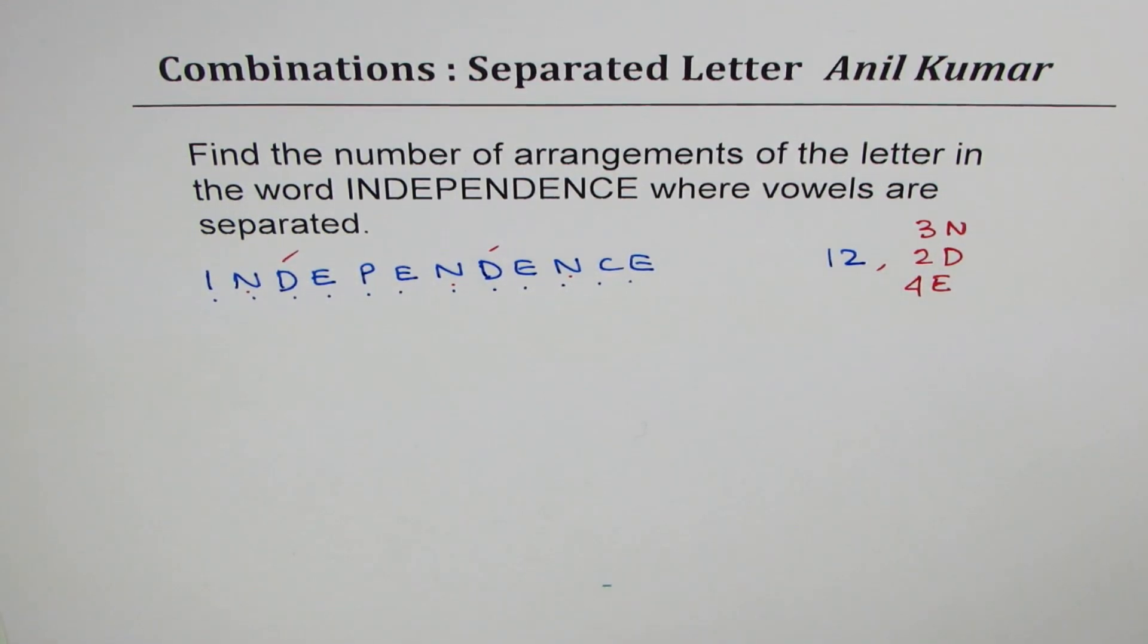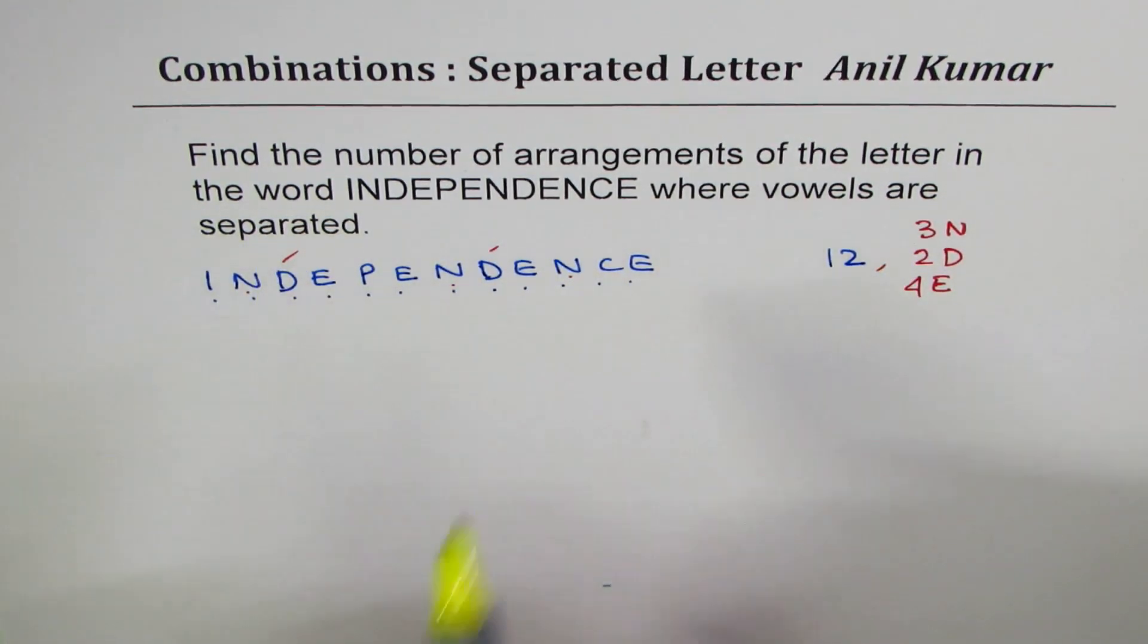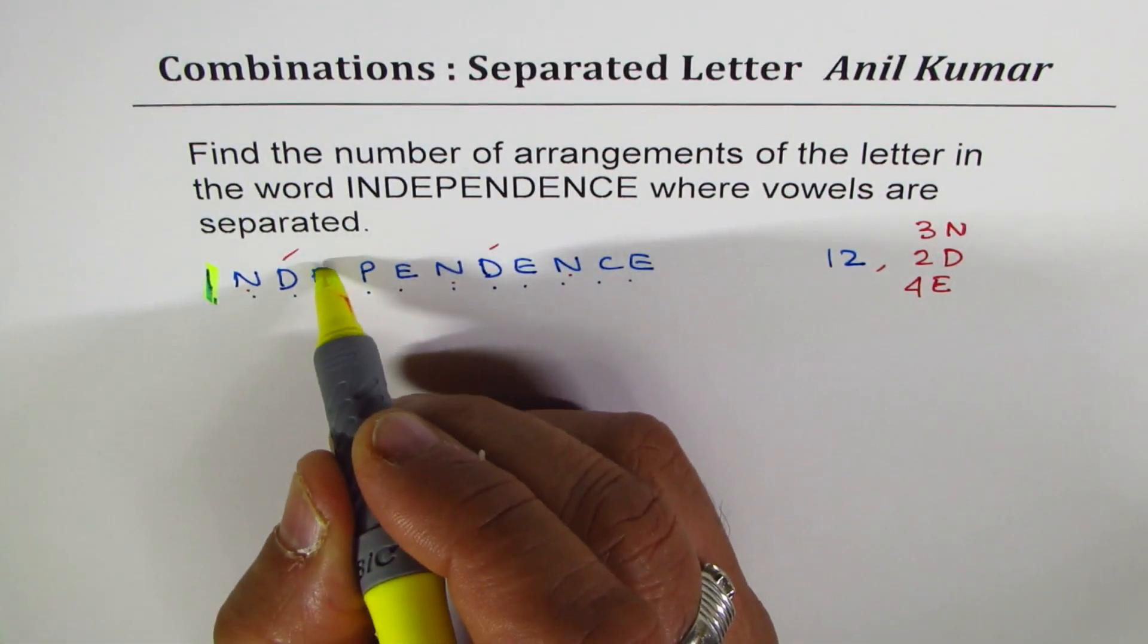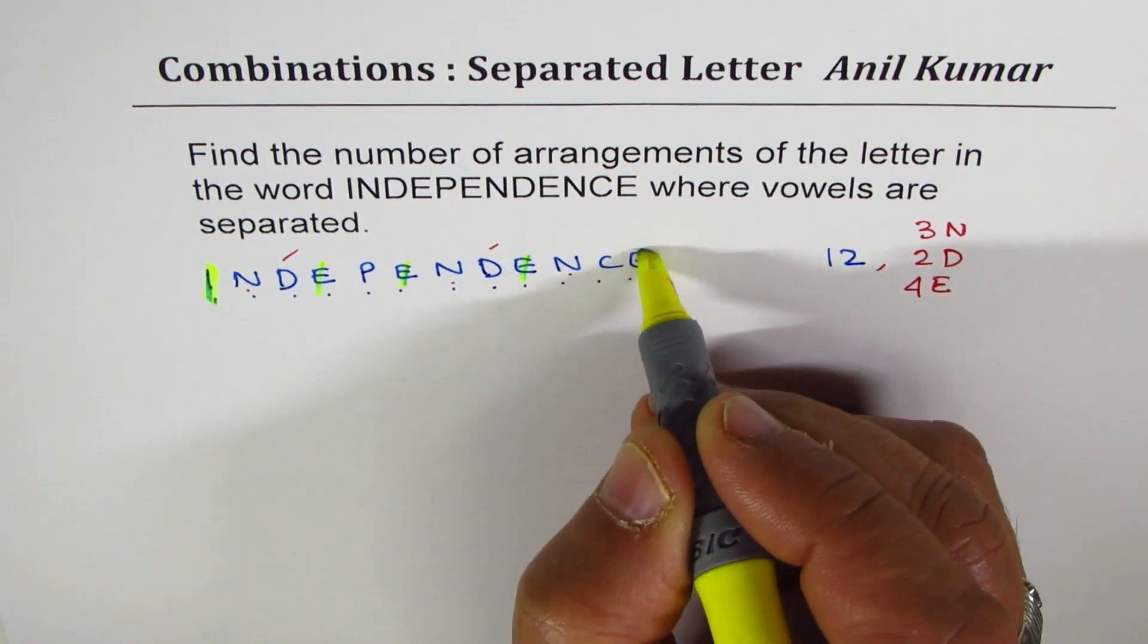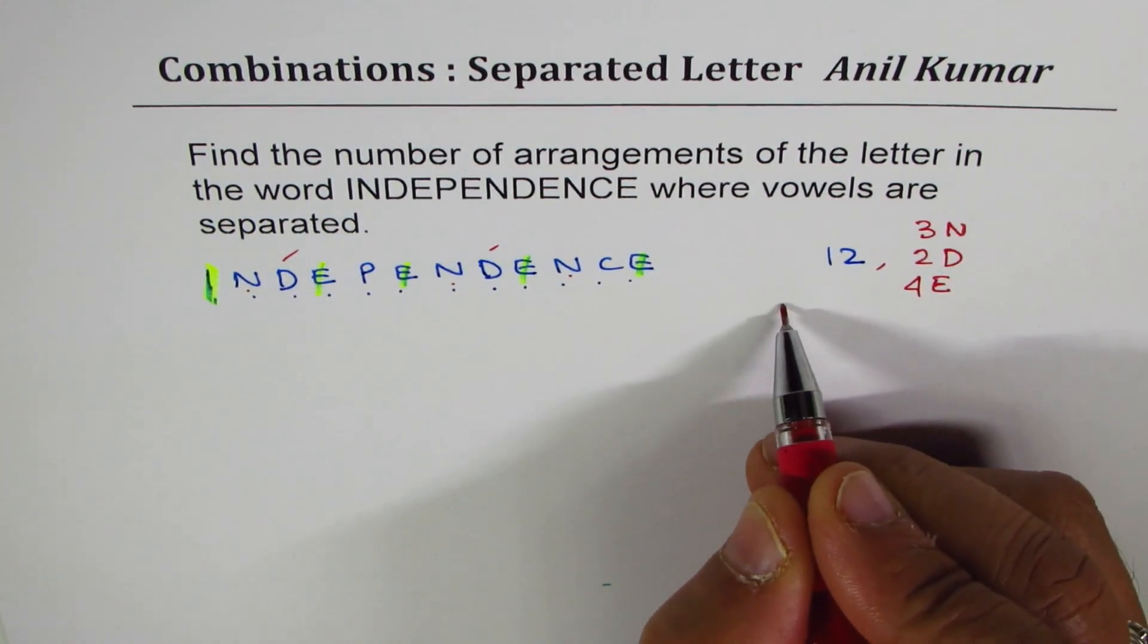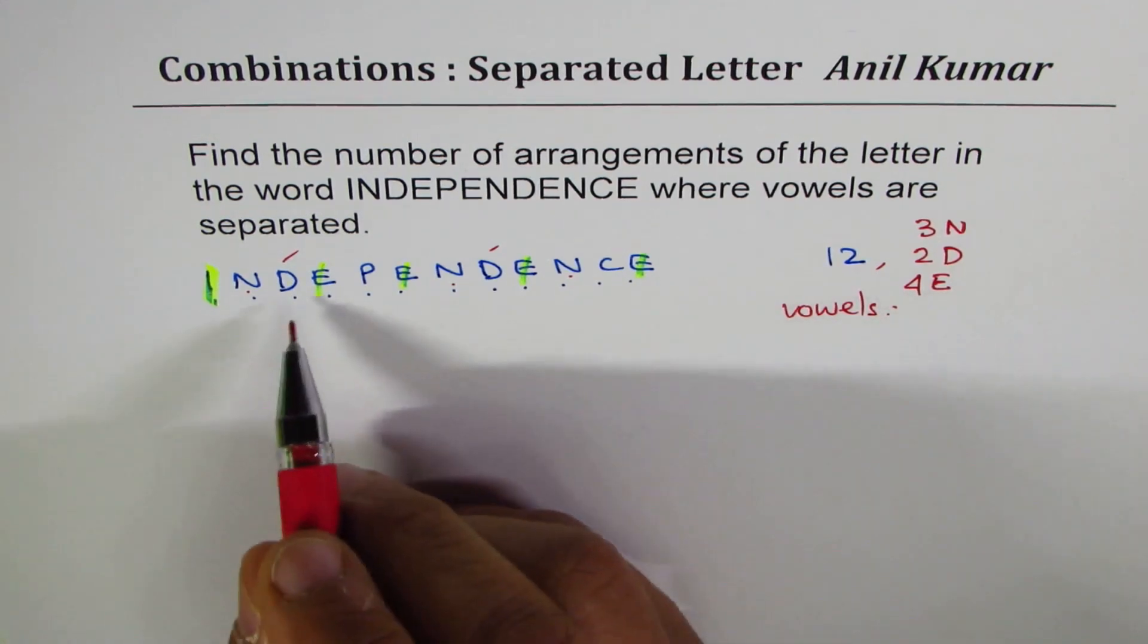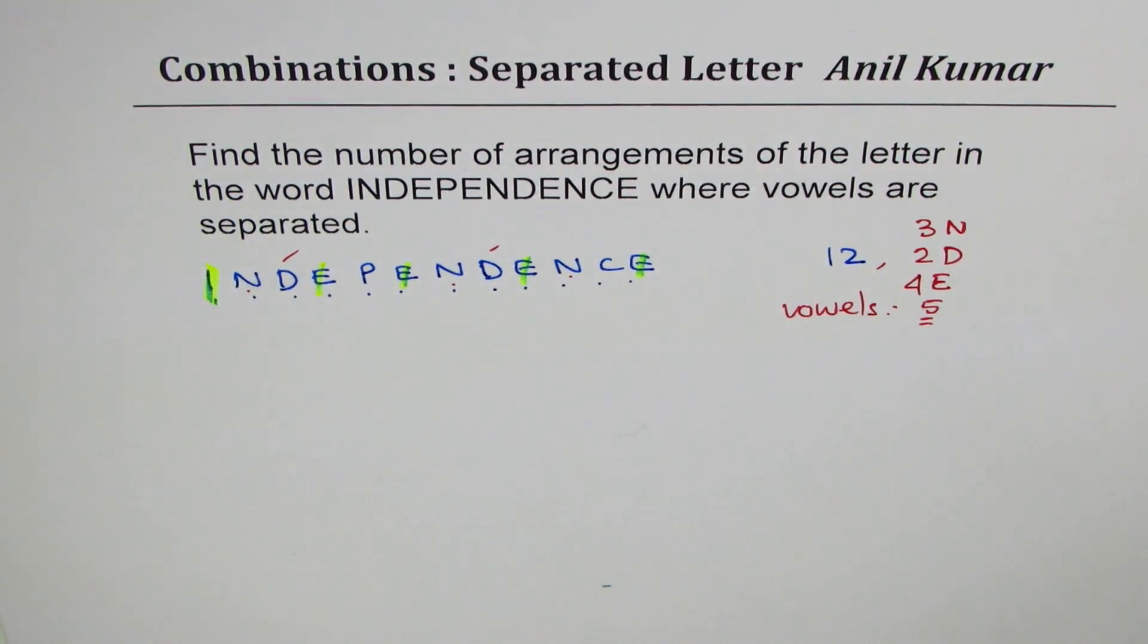Now, how many are vowels? Let's look into vowels now. Let's highlight the vowels. The question is where vowels are separated. So, A, E, I, O, U. We have I and we have got these E's. As far as the vowels are concerned, vowels are four E's and one I. So, five vowels. Now, with that, let's begin answering the question.